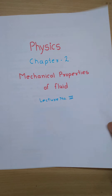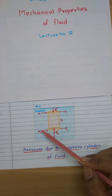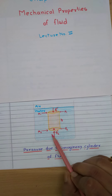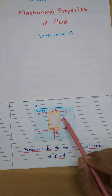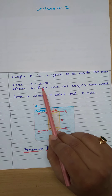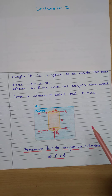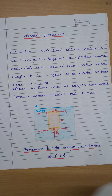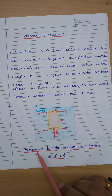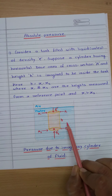Here we see a diagram. Consider a tank filled with a liquid — water of density rho. Suppose a cylinder having horizontal base area (cross-section A) and height h is imagined to be inside the tank. Here h is equal to x1 minus x2, where x1 and x2 are the heights measured from the reference point, and x1 is greater than x2. You can see the tank here — water of density rho, cylinder cross-sectional area A, and height h = x1 minus x2.